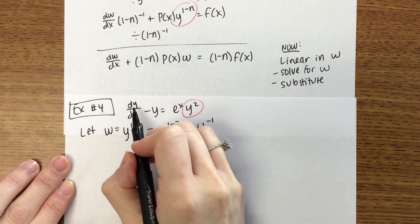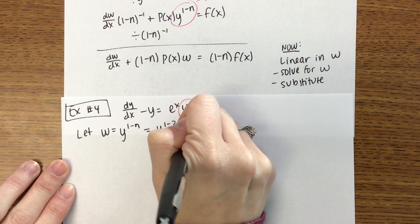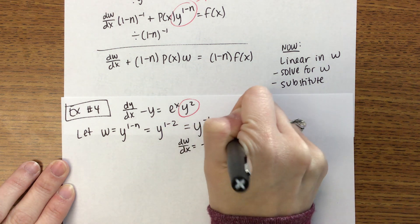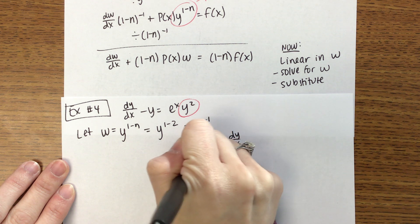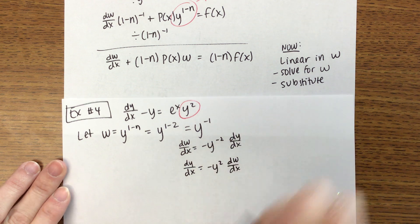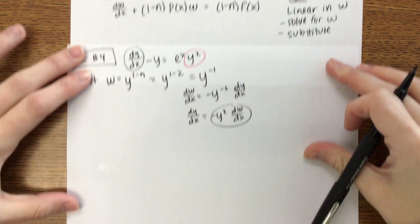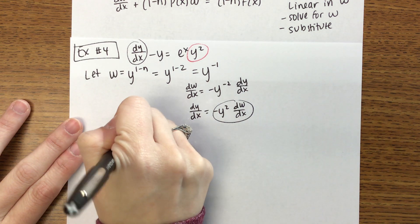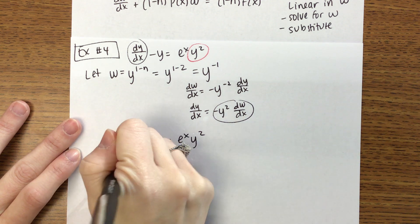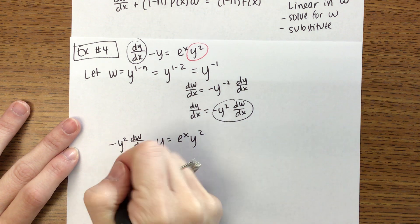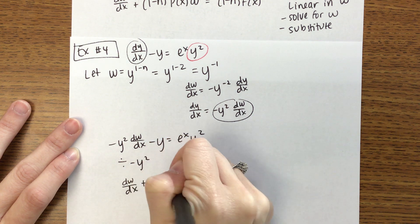Please remember you need dy/dx by itself before you can find w — in this case dy/dx has a coefficient of 1, but in your homework they might not always. Then we need dw/dx: that'll be negative y to the negative two times dy/dx. Solving for dy/dx gives us dy/dx equals negative y squared times dw/dx. Substituting in, we get negative y squared times dw/dx minus y equals e to the x times y squared. Dividing by negative y squared to put this in linear form gives us dw/dx plus y to the negative one equals negative e to the x.